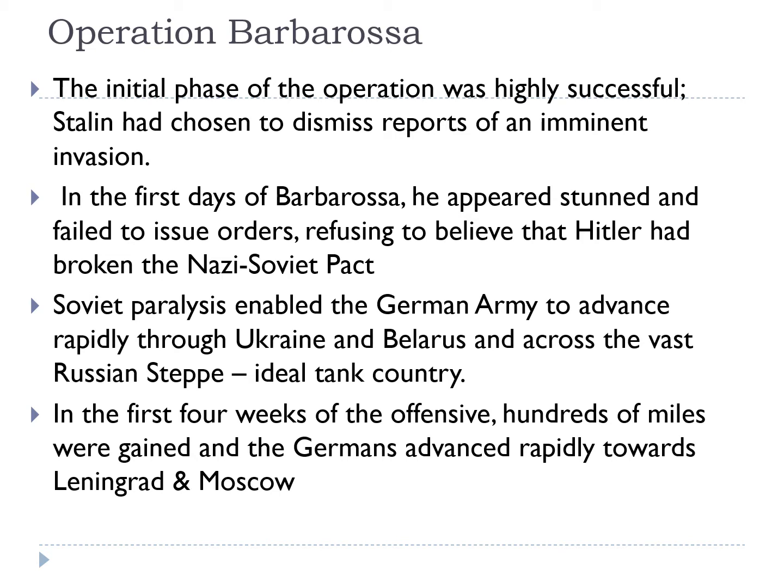In the very first days of Barbarossa, Stalin appeared almost paralysed — stunned, he failed to issue orders and refused to believe Hitler had broken the Nazi-Soviet Pact. This is referred to by some historians as 'Soviet paralysis,' and it enabled the German army to advance rapidly through Ukraine and Belarus and across the vast Russian steppe, which was ideal tank country. In the first four weeks, hundreds of miles were gained and the Germans advanced rapidly towards Leningrad and Moscow.